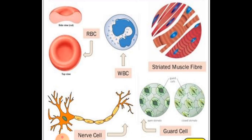These are the figures for the cells we just discussed. You can see the biconcave shape of the RBC, WBC in amoeboid shape, muscular cells which may be cylindrical or spindle-shaped — we have studied three types of muscle cells. Then nerve cells, and guard cells. This covers the few variations regarding the shape and size of the cell, and this variation is due to the function they perform.